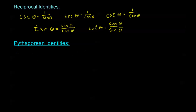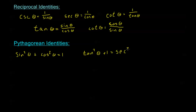We also have our Pythagorean identities. Sine squared theta plus cosine squared theta equals 1. Tangent squared theta plus 1 equals secant squared theta. And 1 plus cotangent squared theta equals cosecant squared theta.